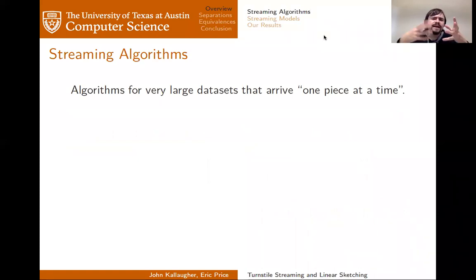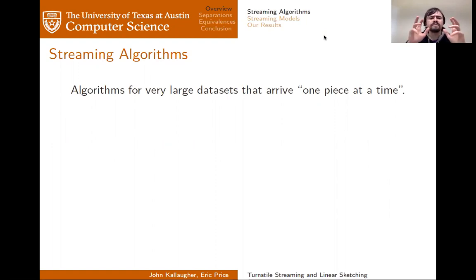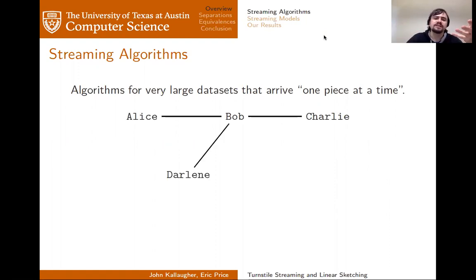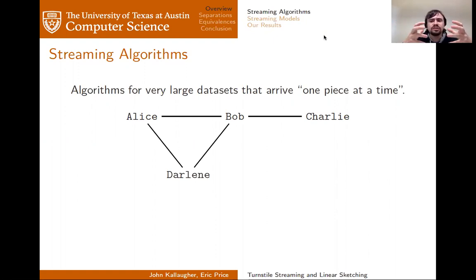Streaming algorithms are a class of algorithms for very large data sets that arrive one piece at a time. Imagine receiving the friendship graph of some very large social network one friendship at a time. For this talk, we're going to be concerned about the relations between different models of streaming computation.